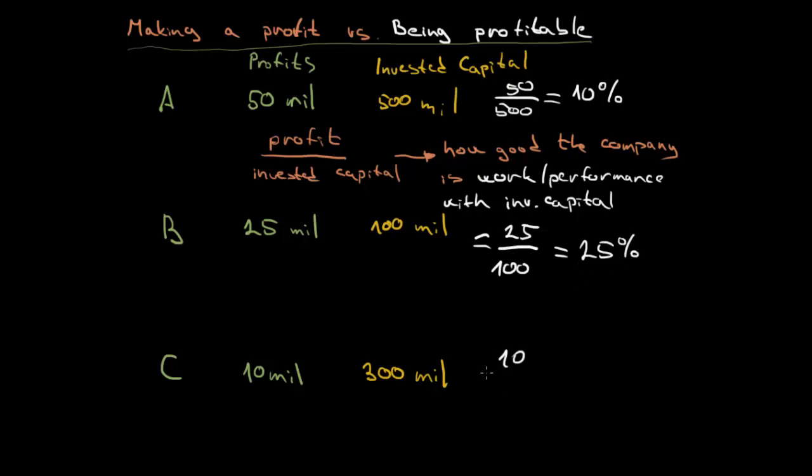And in the case of Company C, it will be 10 over 300, so 3%. So now let's take a look at being profitable. We already have it. So Company A is 10% profitable, Company B is 25% profitable, and Company C 3%. So if we take a look at being profitability from the point of how good the company is with work and the performance of the invested capital, in this case Company B comes out as the best. So this was the difference between making a profit and being profitable and hopefully see you in the next video.